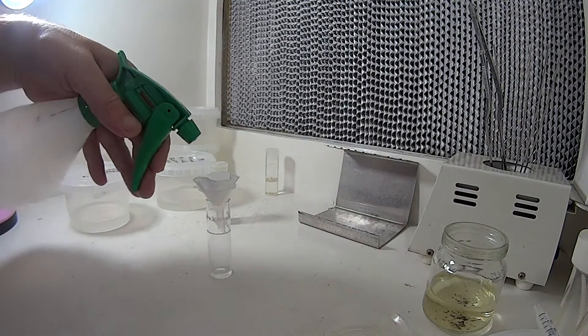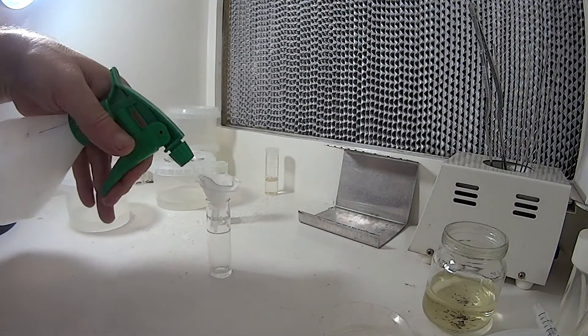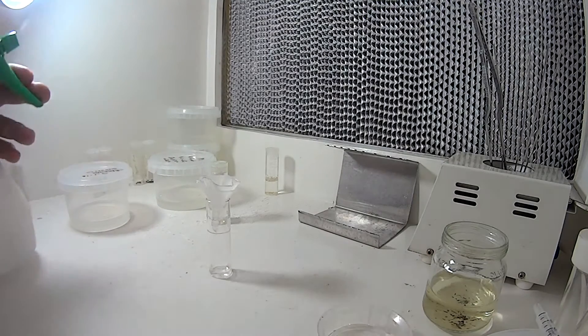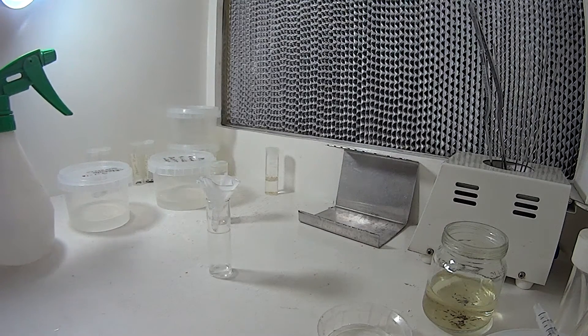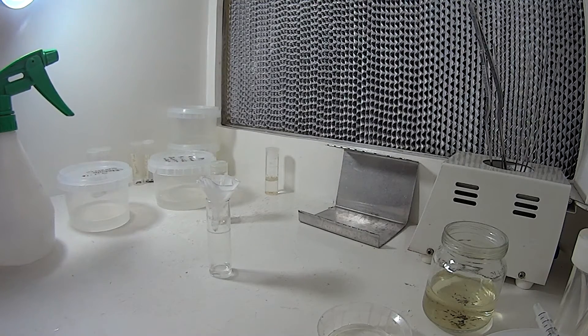So to sterilize that before I use it is just giving it a good soak with alcohol, give it a good soak, let it dry out a little bit, and then give it another go, and we'll come back to that.